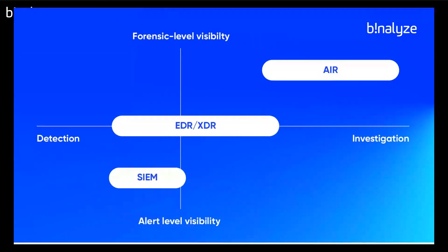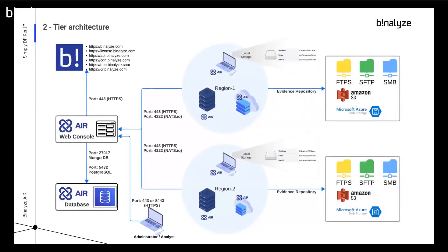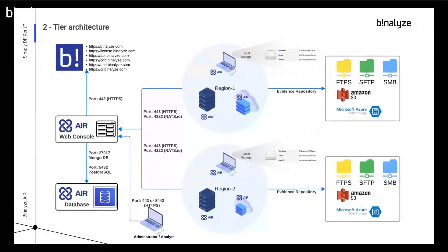The other slide I just wanted to touch on briefly — this is what we call a two-tier architecture. On the left-hand side is my representation for the web console. We've split the database away, so we have the database on a secondary server. Out in the field, we've got a couple of regions where we have a variety of devices. We support Mac, Linux, Windows, IBM AIX systems, Chrome, ESXi, etc. — plenty of coverage for what we can cover out there.